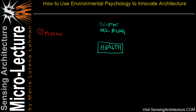The first is physiological health. The second is intellectual health. The third is emotional health. The fourth is behavioral health. And the fifth is spiritual health.